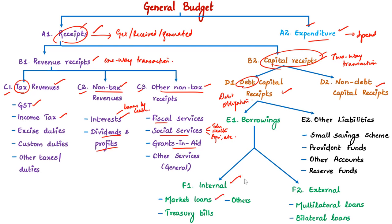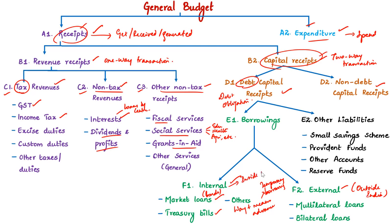Internal borrowing is money borrowed from within the country — it includes market loans raised by issuing bonds, amounts raised by issuing treasury bills to the RBI and other banks, and ways and means advances by the Reserve Bank of India, which are short-term interest-bearing advances to the government to meet temporary needs. External borrowing includes money borrowed from outside India from multilateral agencies such as the IMF or World Bank, and bilateral loans from other countries. A country can manage its debt only when internal borrowings are more than external borrowings. Other liabilities forming debt capital receipts include money raised through small savings schemes and provident funds kept in public accounts.